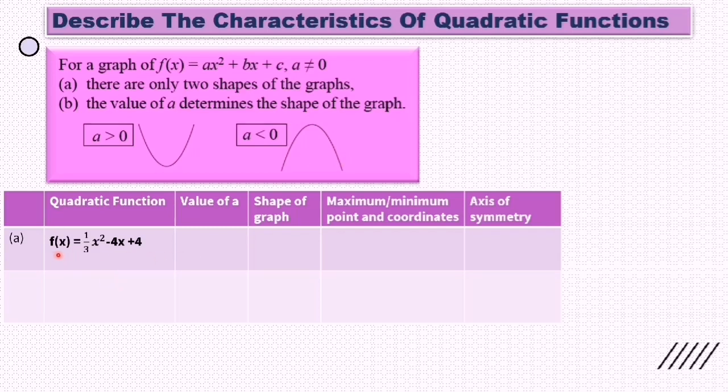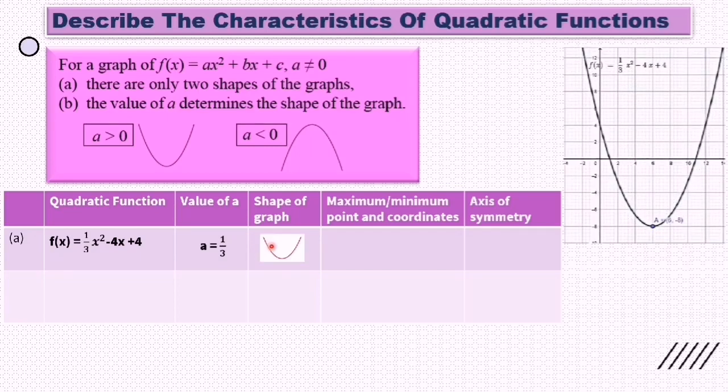Now if f(x) = (1/3)x² - 4x + 4, the value of a is 1/3. The shape of the graph, because a is positive, looks like a U-shape. This graph will have a minimum point because the point is at the bottom of the graph.